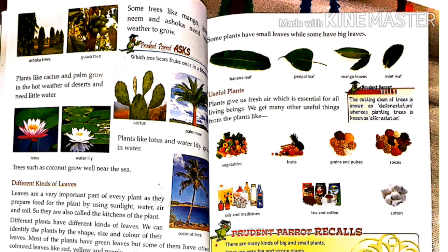In this chapter, we learned about trees, different types of plants, creepers, climbers, and herbs. We also learned about where plants grow — in water, in the desert, and in different climates. Thank you, and hope you liked the video.